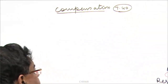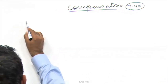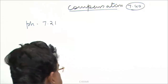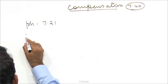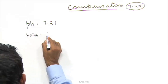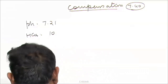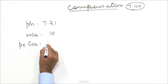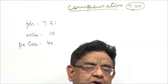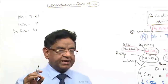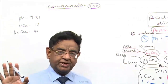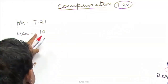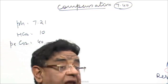Let us take a case. I have a patient whose pH is 7.21 — obviously a case of acidosis. Bicarbonate is 10, so obviously it is a case of metabolic acidosis, because low bicarb is metabolic. His PaCO2 is 40, which is normal. So we call this a case of acute metabolic acidosis. The pH is reduced, metabolic acidosis, and CO2 is normal — hence acute.